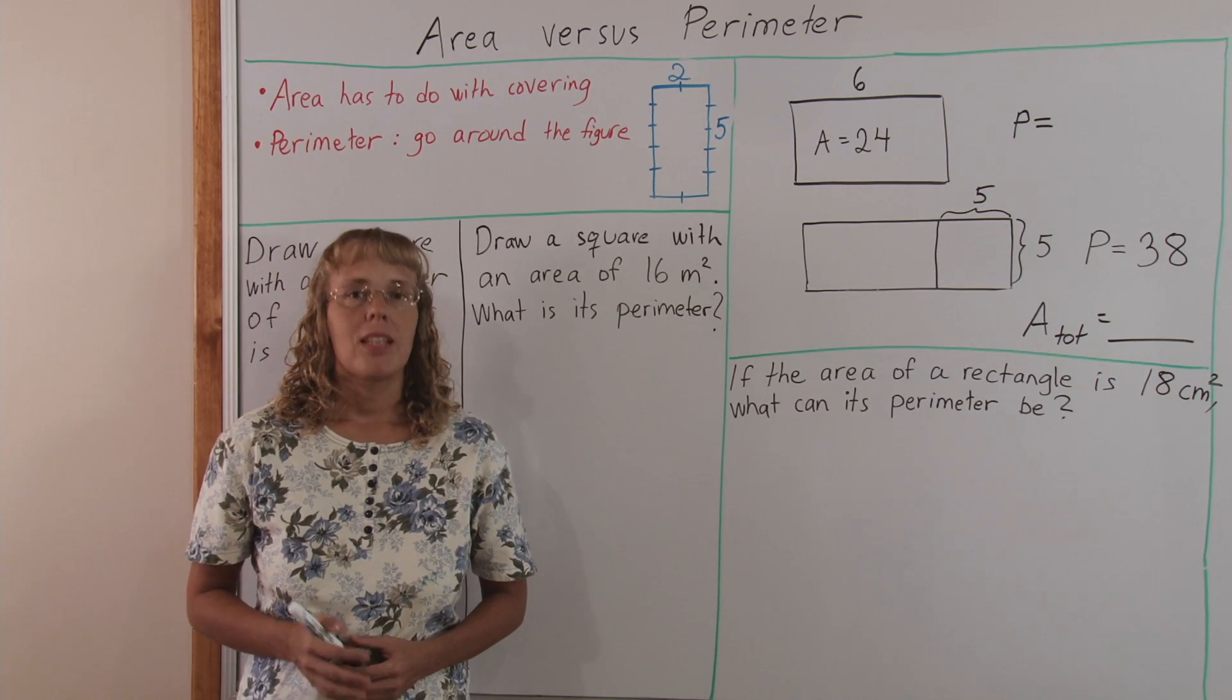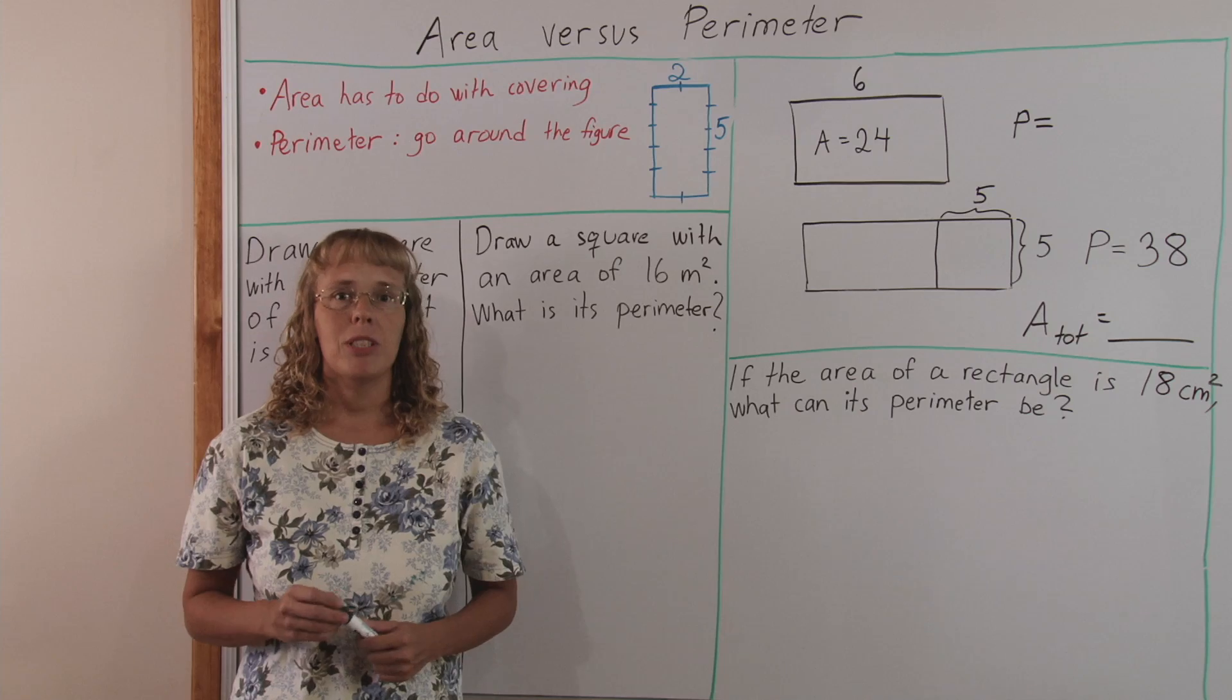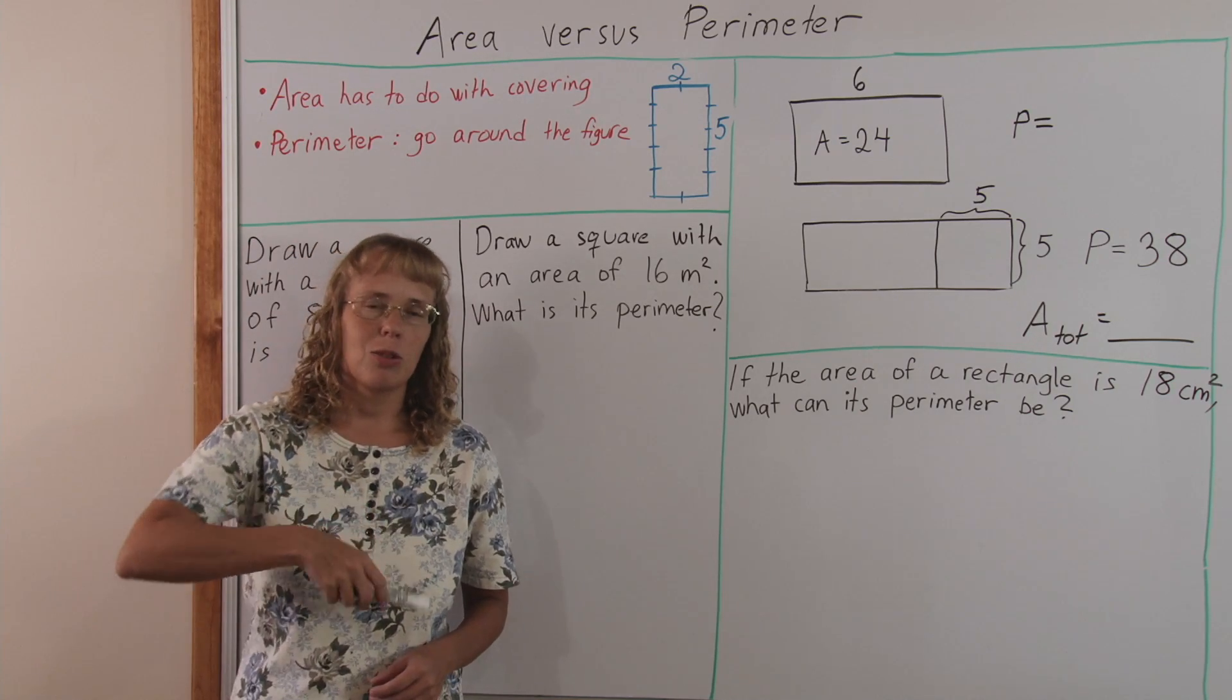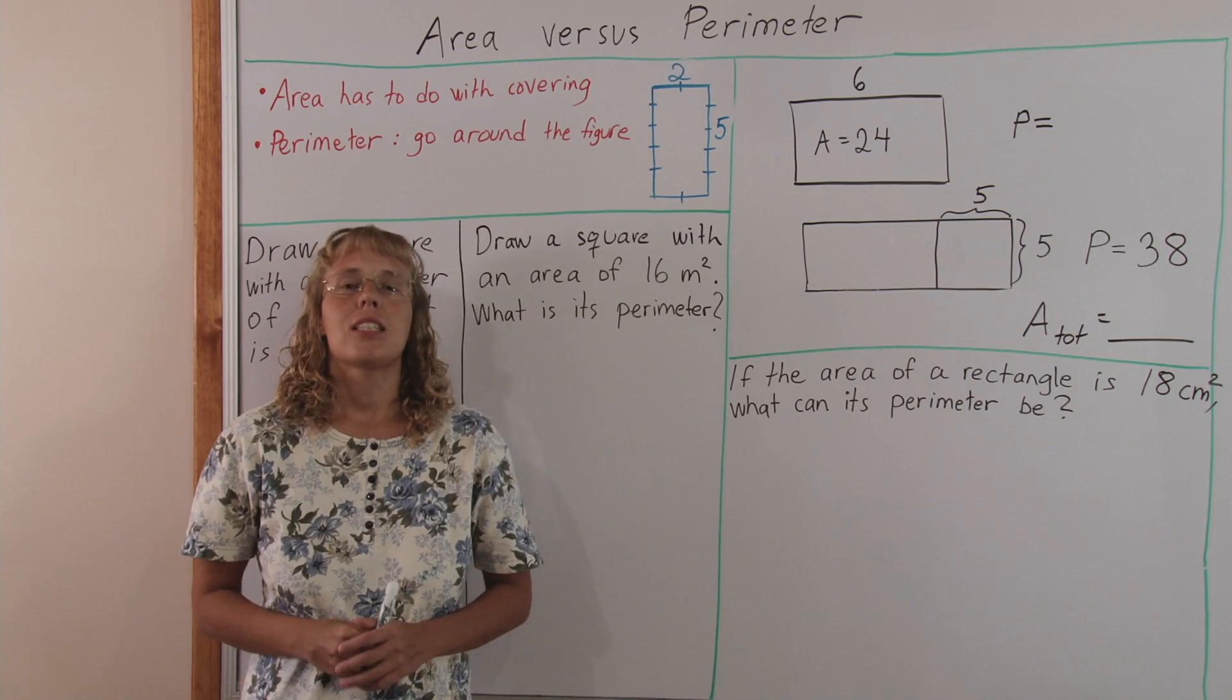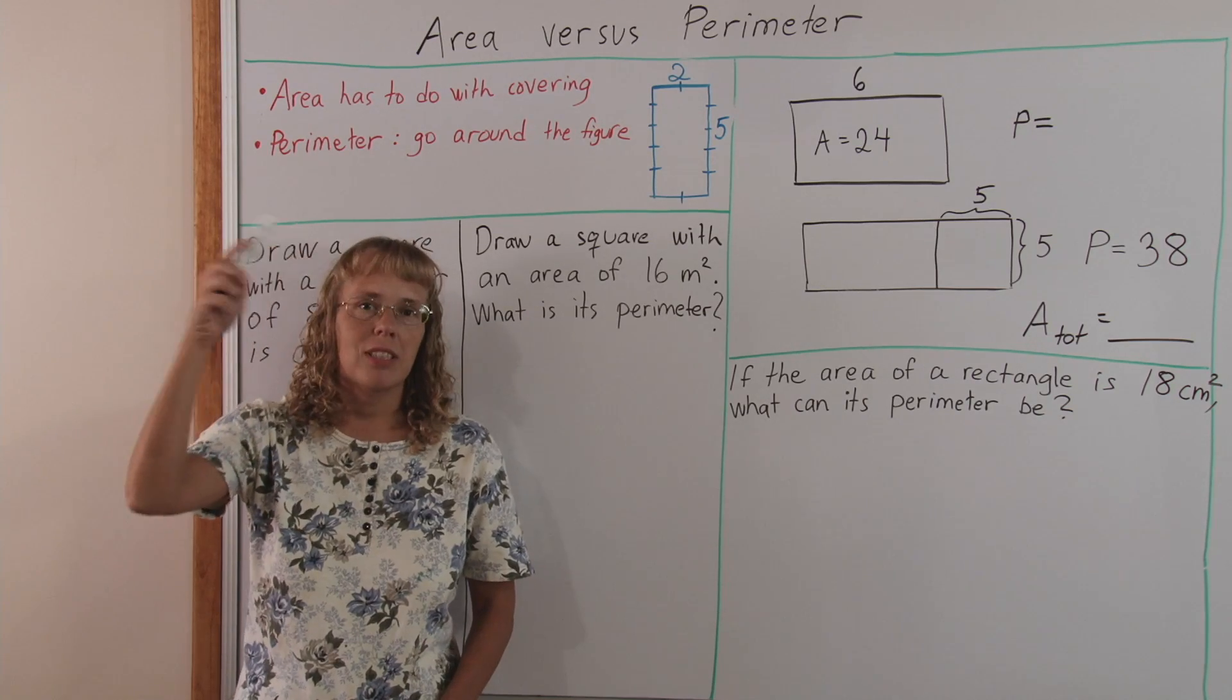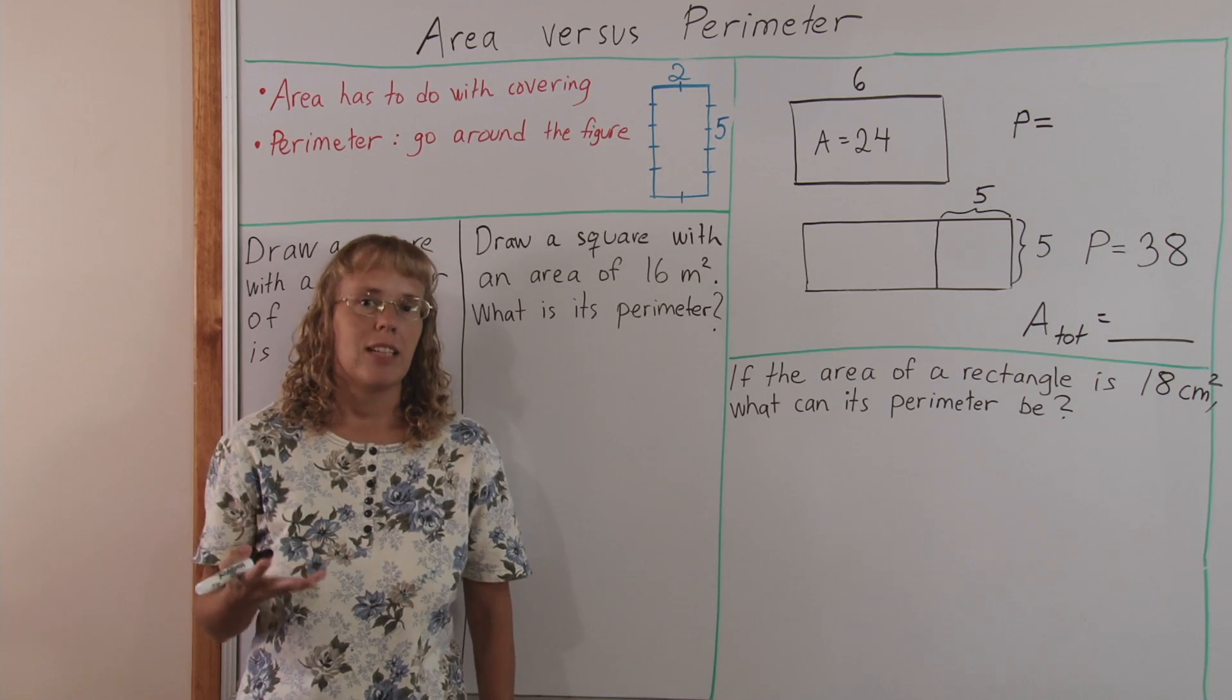Just remember, area has to do with covering, and perimeter has to do with going around the figure, like you make a loop, you go around it, jog around it. So perimeter has to do with a distance you run around something, and area is area, okay?